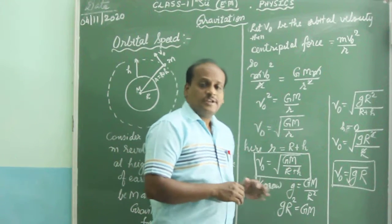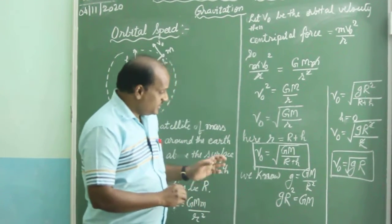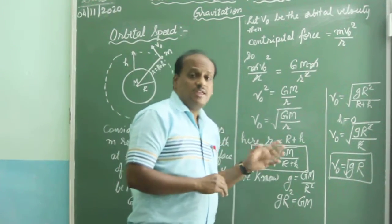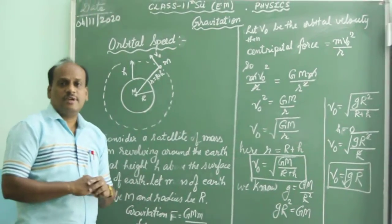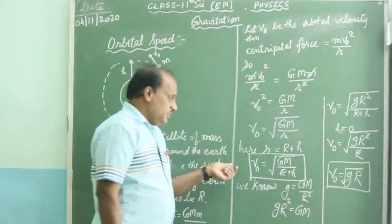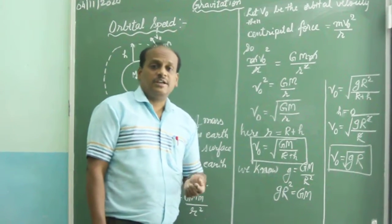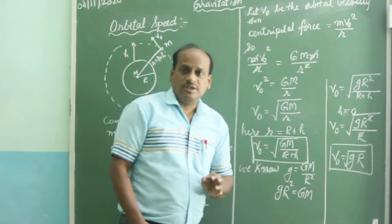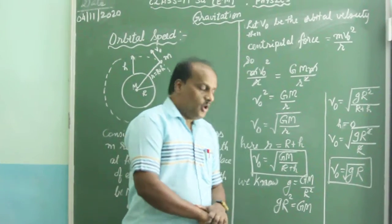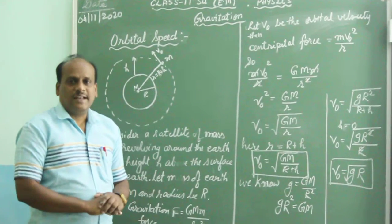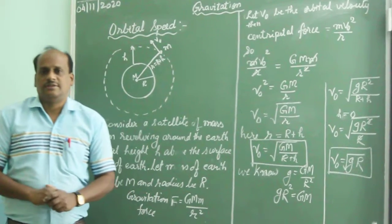From this expression it is clear that the orbital velocity of the satellite is independent of the mass of the satellite, small m. So the orbital velocity of any satellite revolving around the Earth is independent of the mass of the satellite. These are the two expressions for orbital velocity of a satellite revolving around the Earth. Thank you.